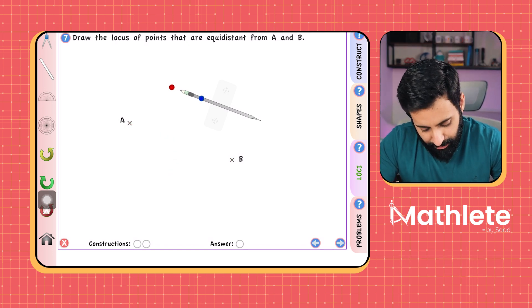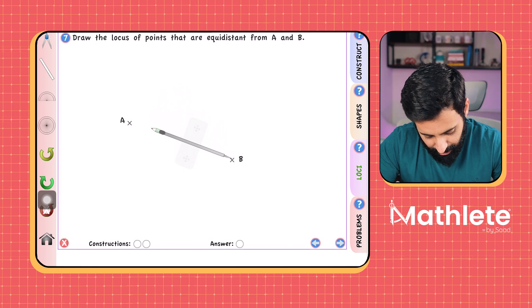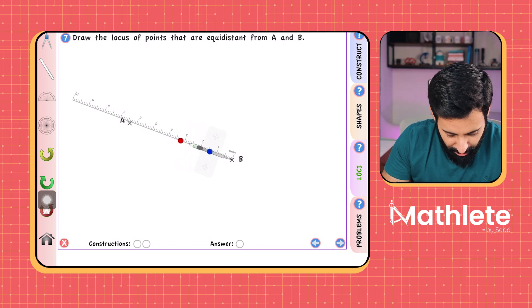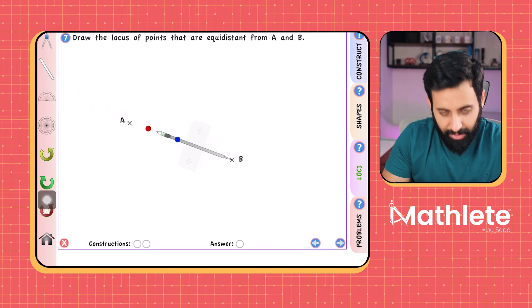So here's your first step. First step is that you place the pointed side of the compass at point B and make sure that you hold your compass firmly. Now, what should be the length of your compass? It should just be more than half of the distance of AB.